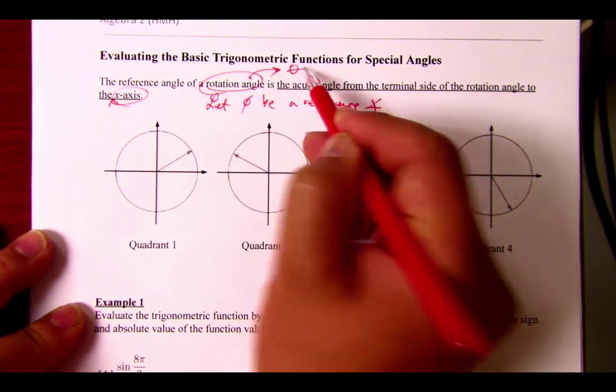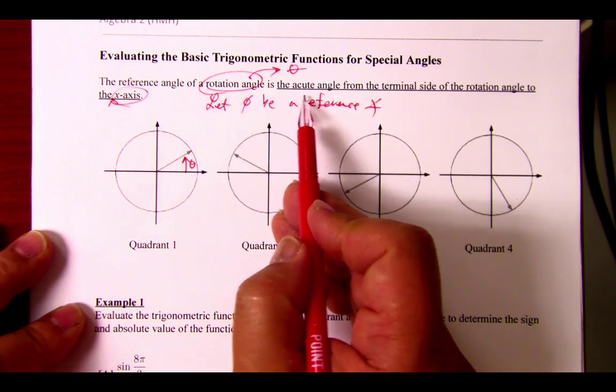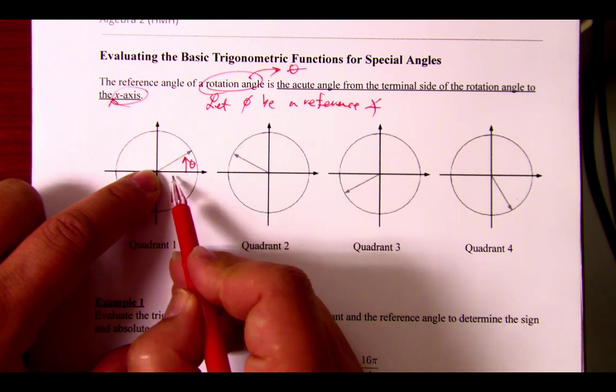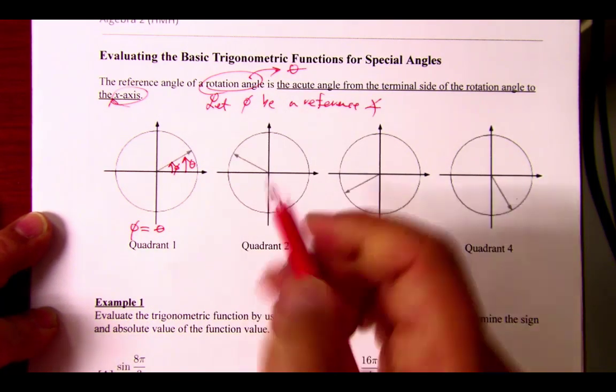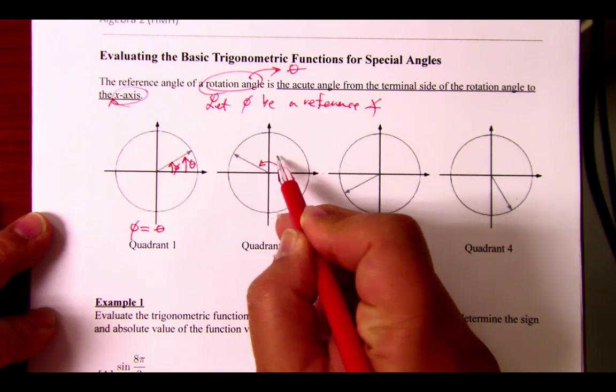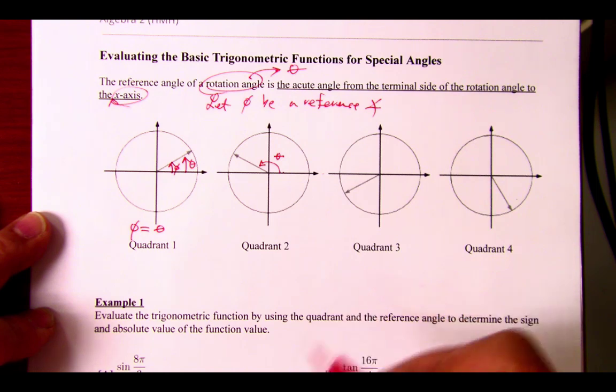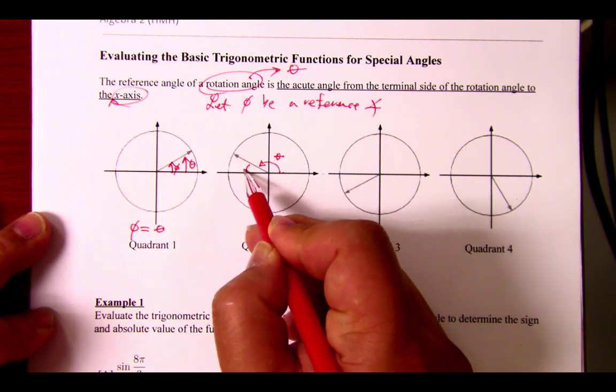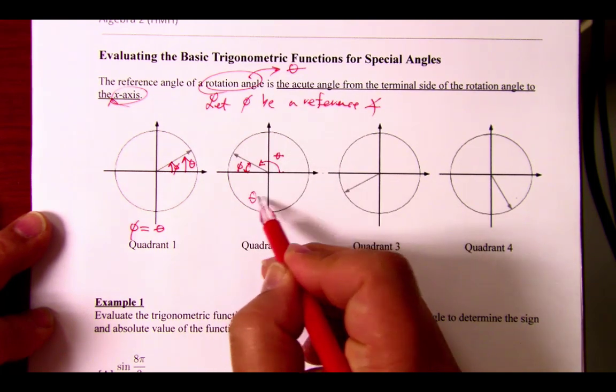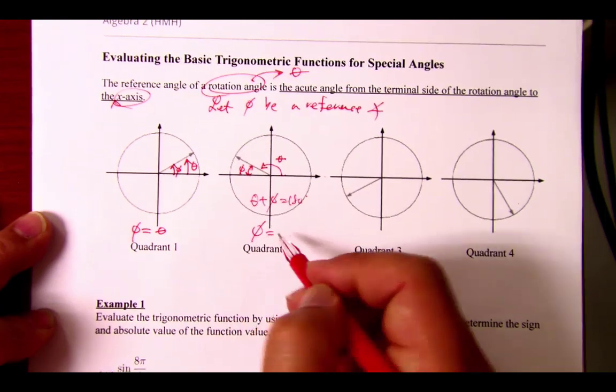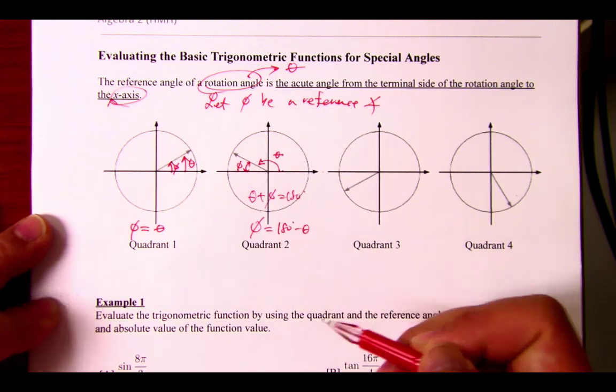In this case, that is my theta. But by definition, it is the acute angle from the terminal side to the closest x-axis. So this is also phi. My reference angle also happens to be my actual angle. In quadrant 2, my rotational angle starting from the positive x-axis is theta. But the reference angle is from the terminal side to the closest x-axis. These two make up half a circle, which means that theta plus phi is 180 degrees. So if you know the angle, we know that phi is 180 minus theta.